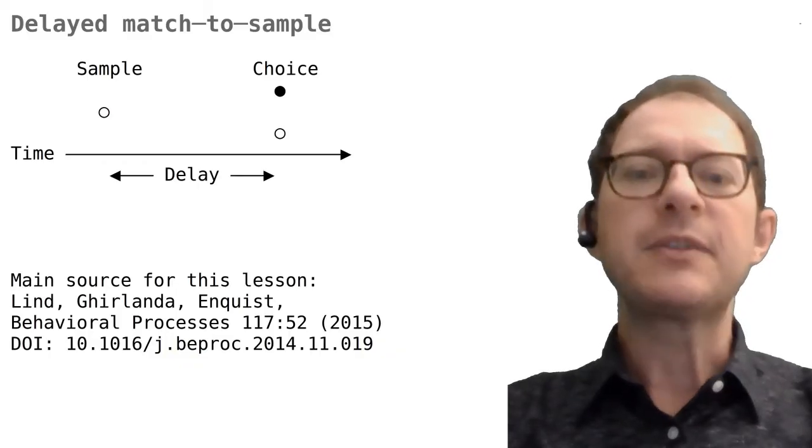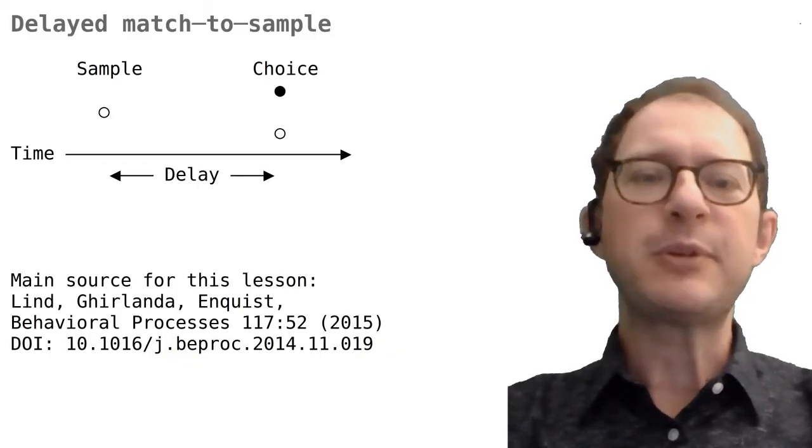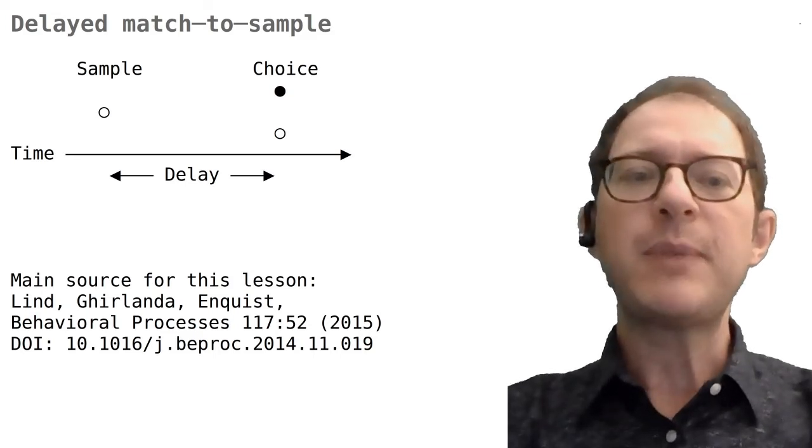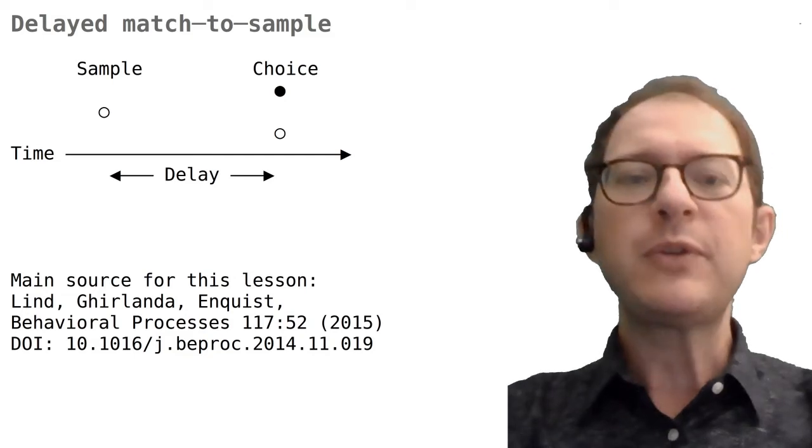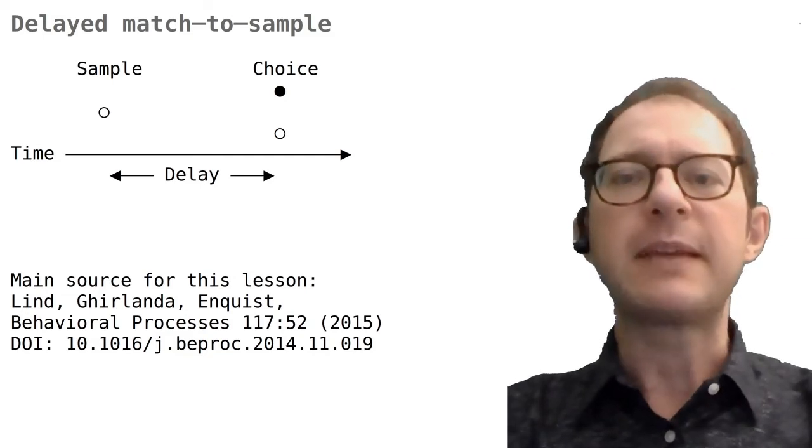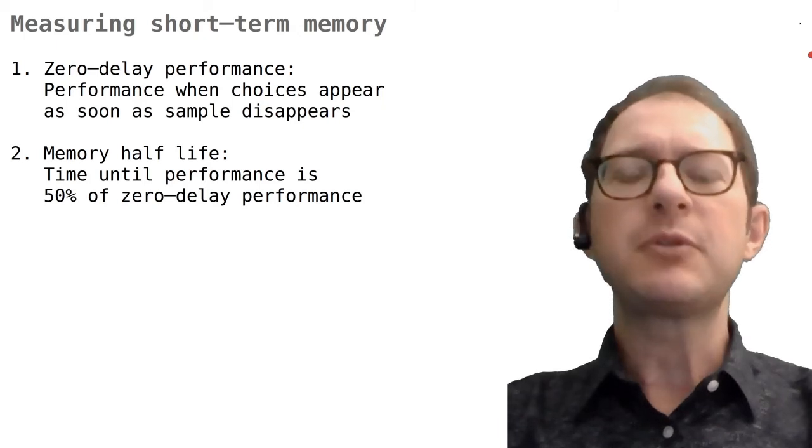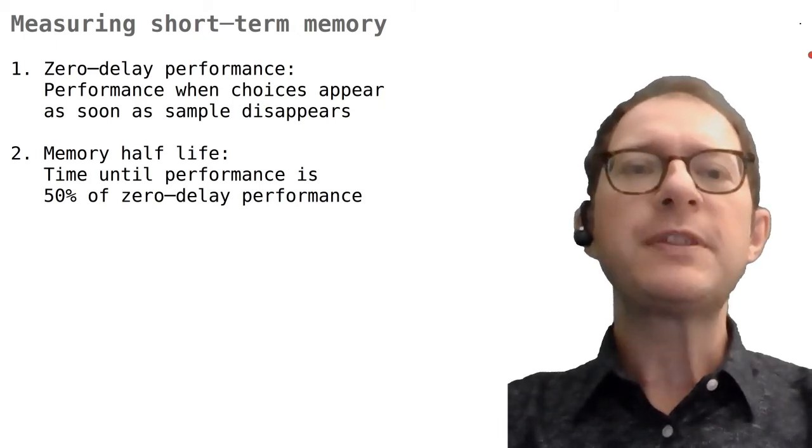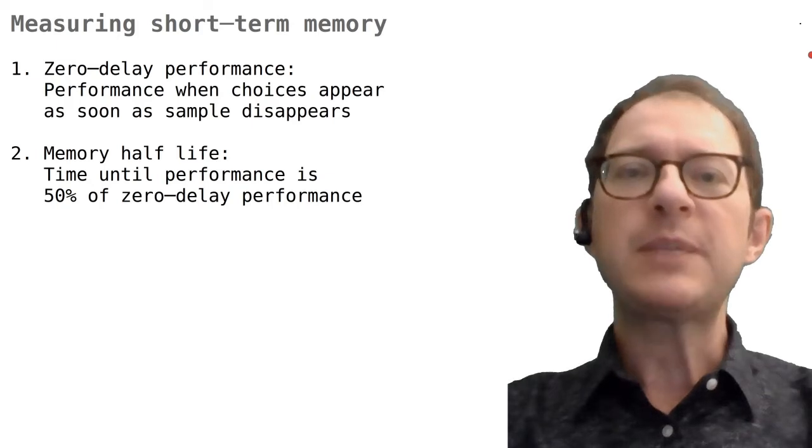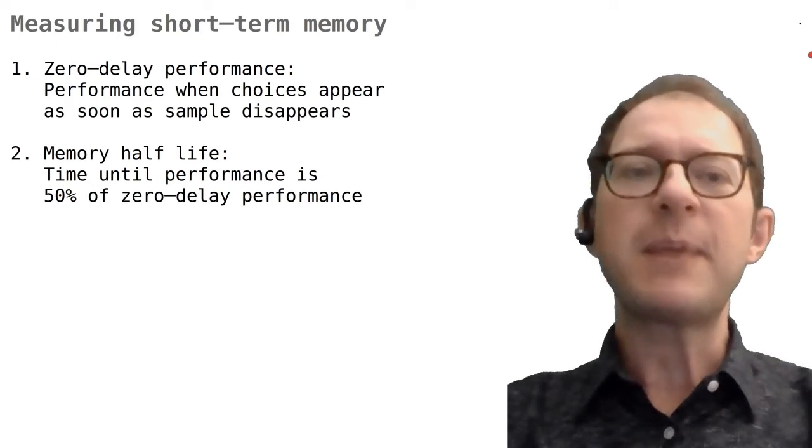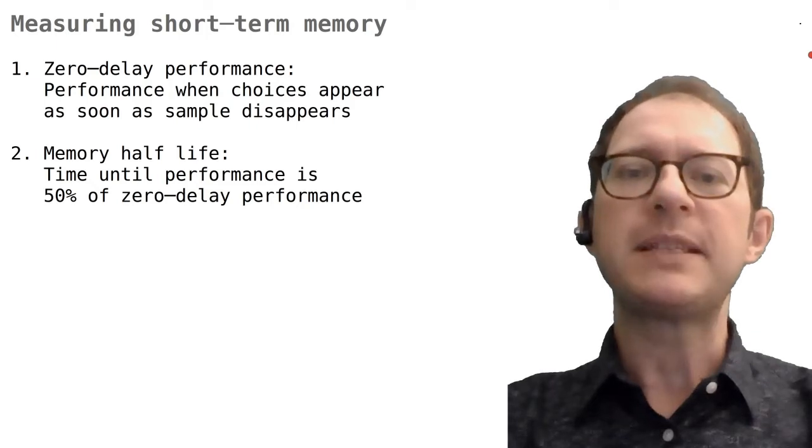In this lesson we will look at how different species perform in the DMTS task. Our main source will be the paper indicated here at the left, which I wrote a few years ago with Johan Lind and Magnus Enquist. Let's see in practice how DMTS is used to measure short-term memory. The first thing to do is to measure the animal's performance when the delay is zero, that is when the choice stimuli appear as soon as the sample disappears.